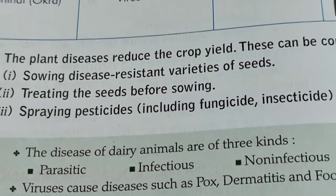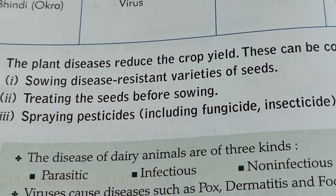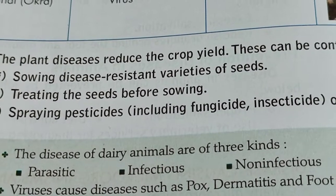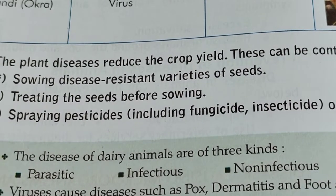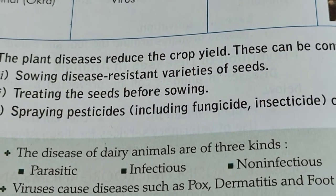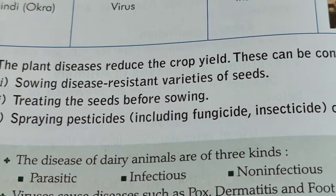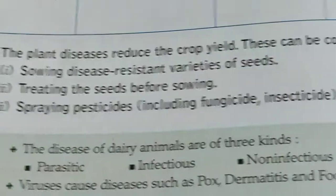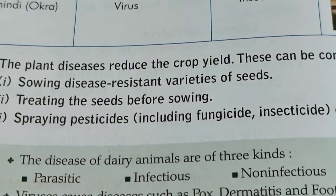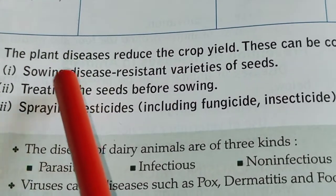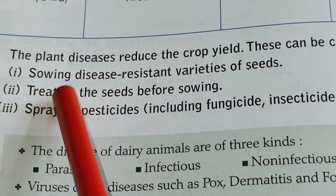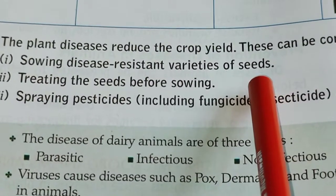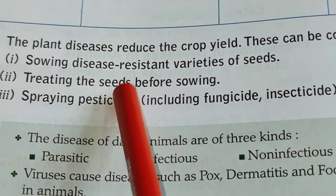Plant diseases reduce the crop yield in the field. The precautions to control plant diseases are as follows. First, farmers have to sow disease-resistant varieties of seeds and be very careful in selecting them.